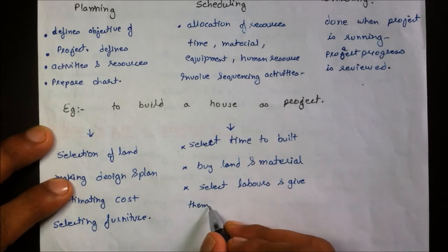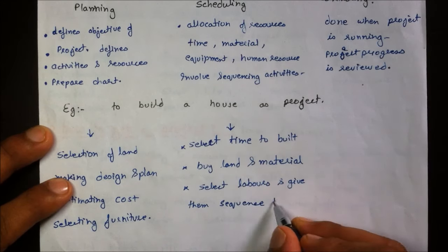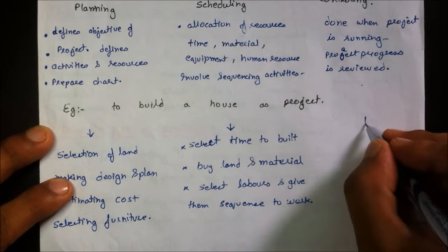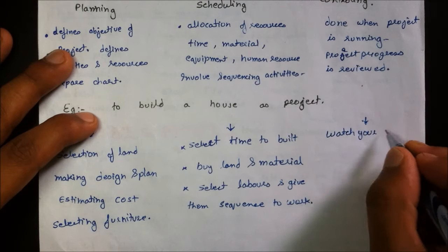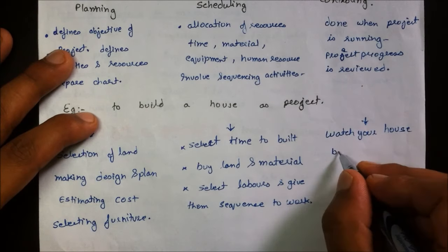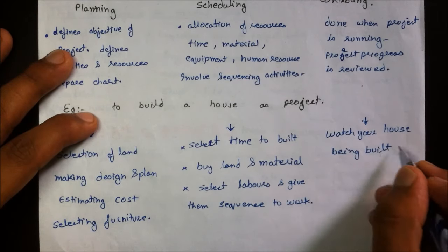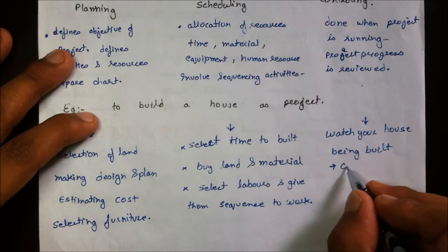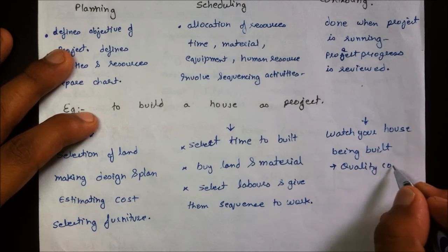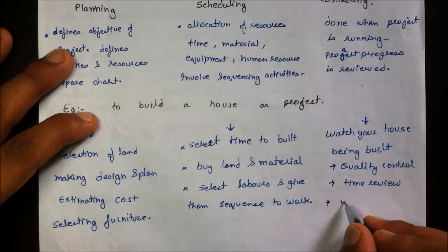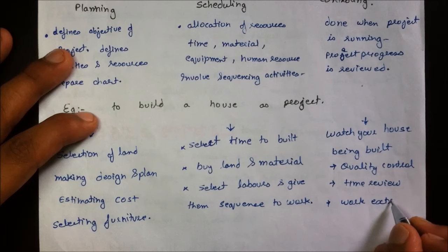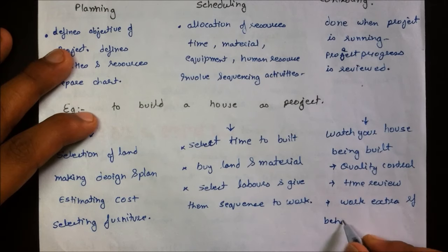Controlling in the house example means watching the house being built. It allows for quality control, time review, and extra work on processes which are behind schedule.